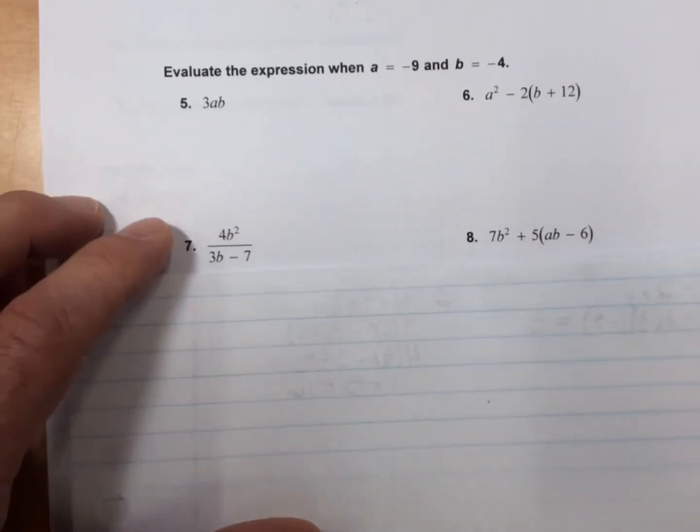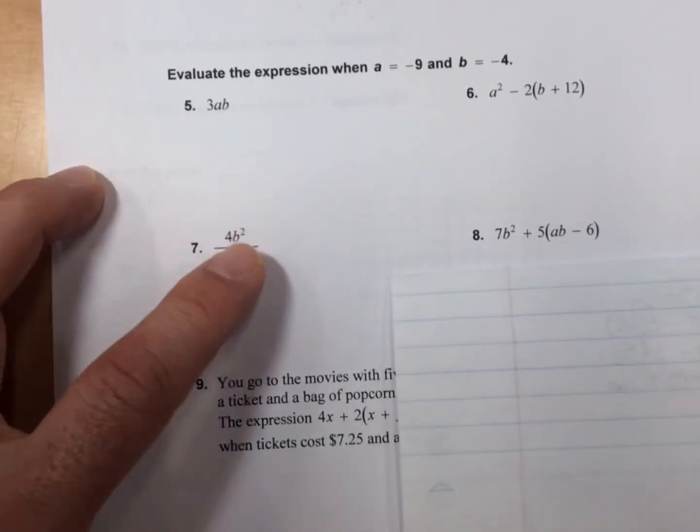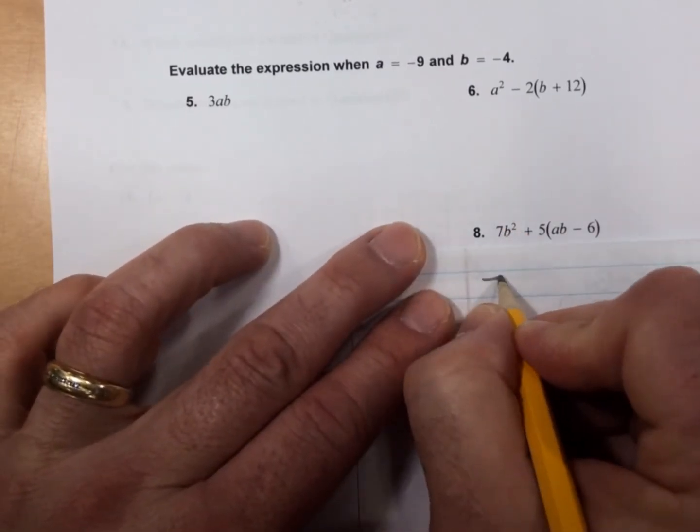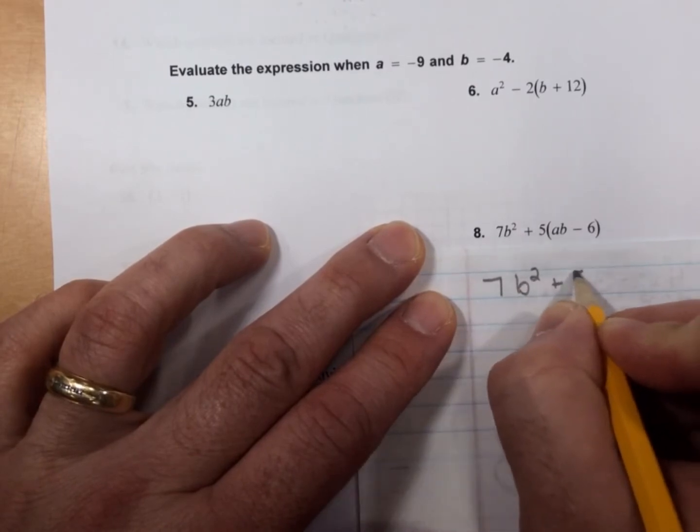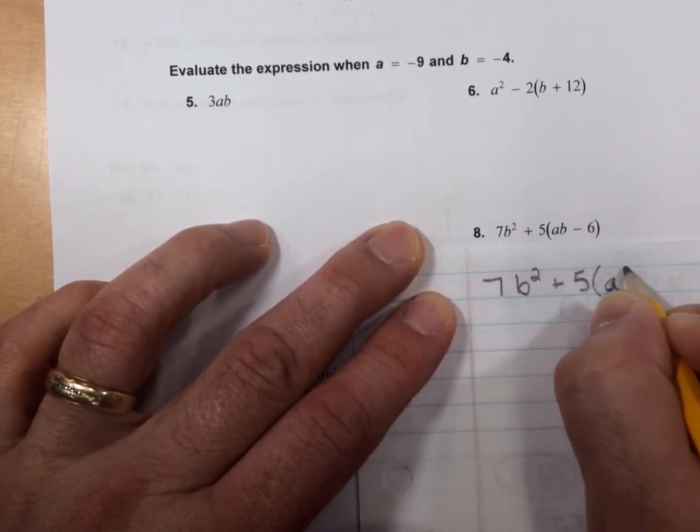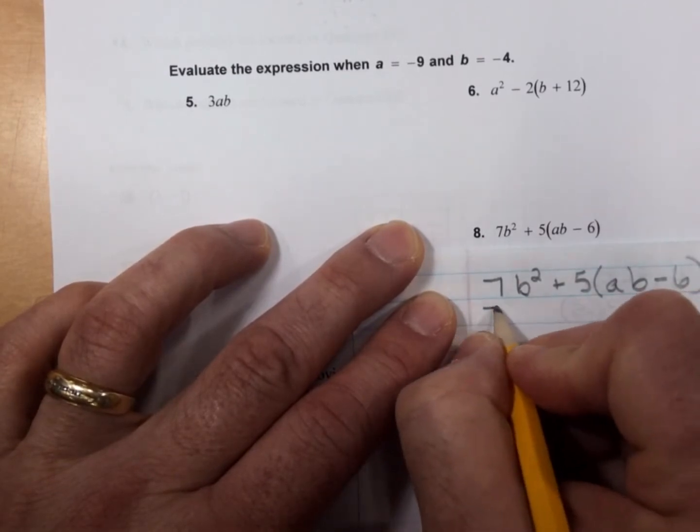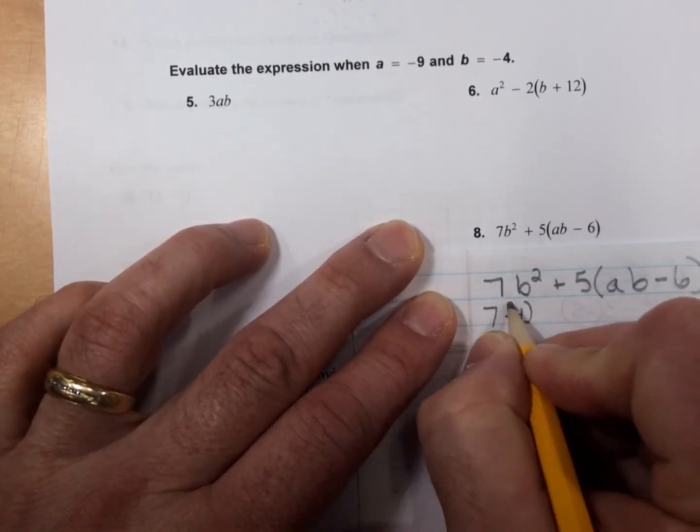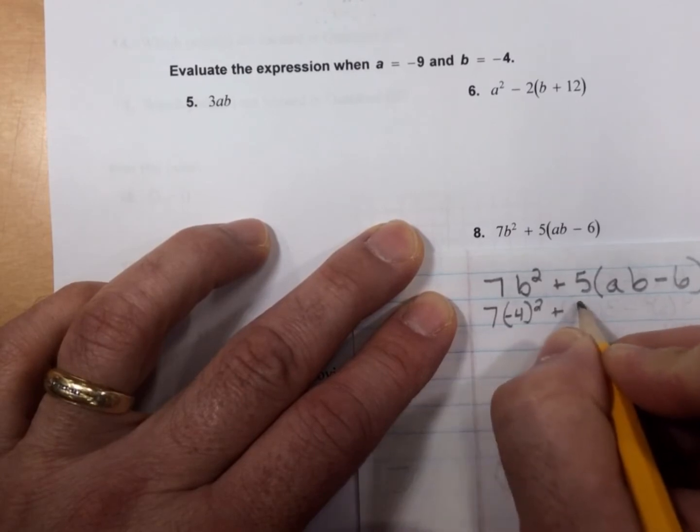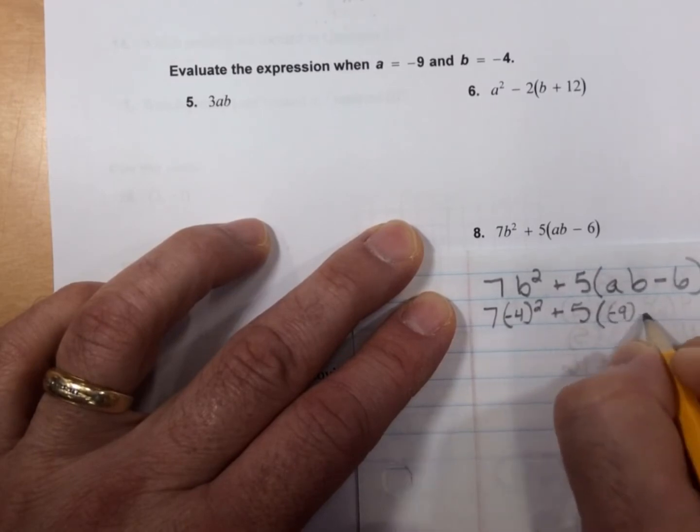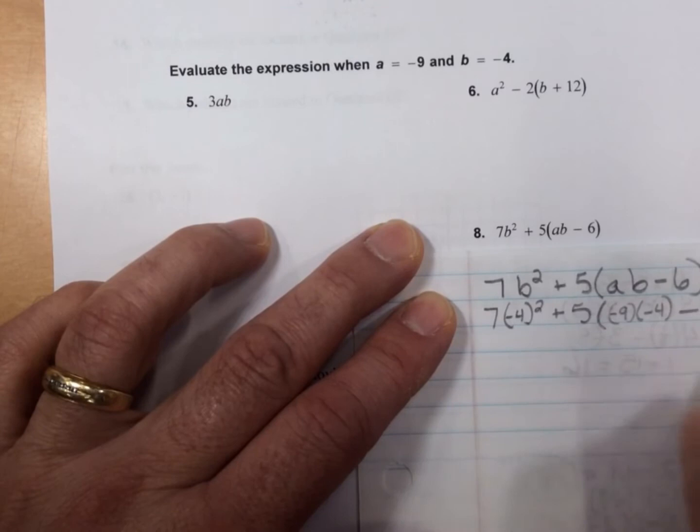For number 8, 7b² + 5(ab - 6). 7(-4)² plus 5. And then that's -9 times -4 minus 6.